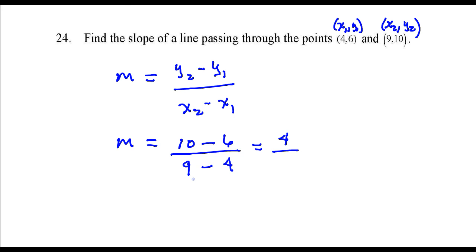In the denominator, 9 minus 4, that's 5, and that's the slope of the line.